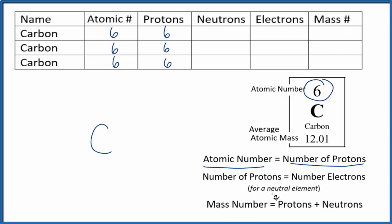And for neutral elements, the number of protons equals the number of electrons. And again, it doesn't matter what type of isotope you have for carbon. So that's all six. We're left with neutrons and the mass number.